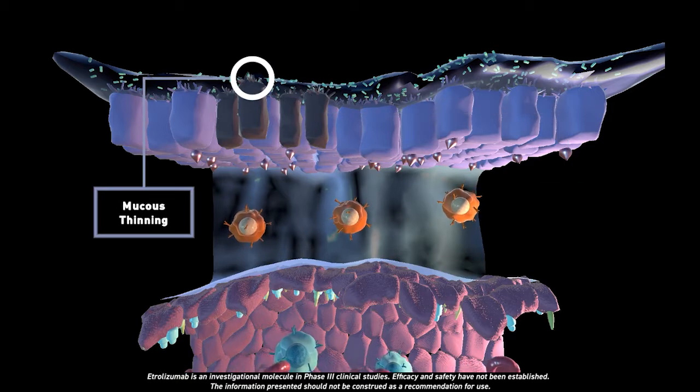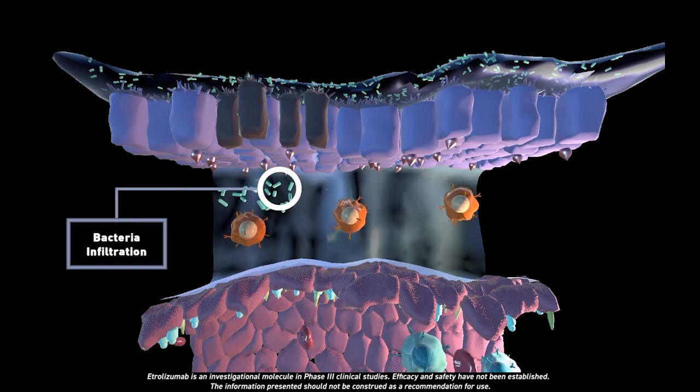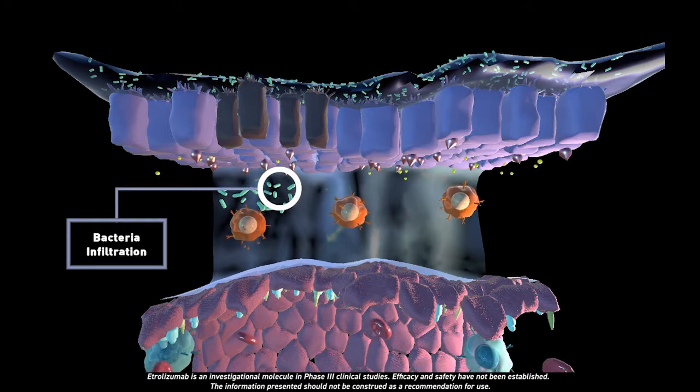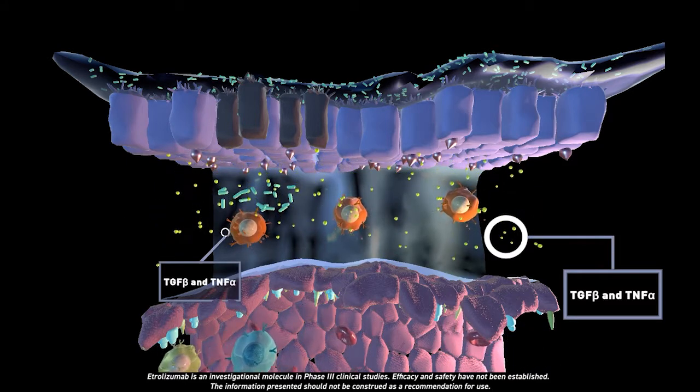The disruption of this barrier allows for the infiltration of bacteria into the lamina propria, where local cells respond by secreting cytokines, such as TGF-beta and TNF-alpha, to attract immune cells to fight the pathogens.